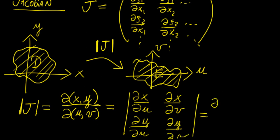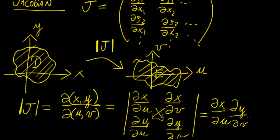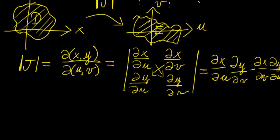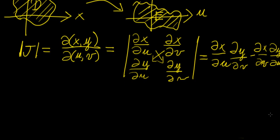Using cross multiplication for a two-by-two determinant, this reduces to x_u · y_v minus x_v · y_u. That is your determinant — the Jacobian in two dimensions.